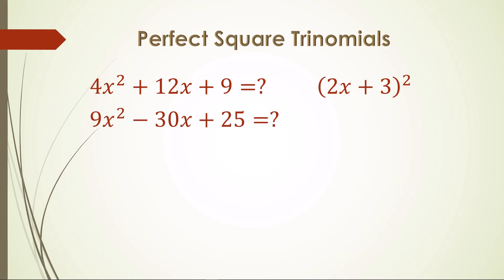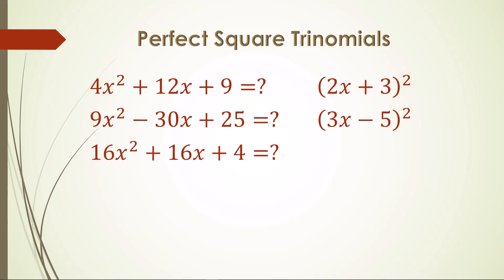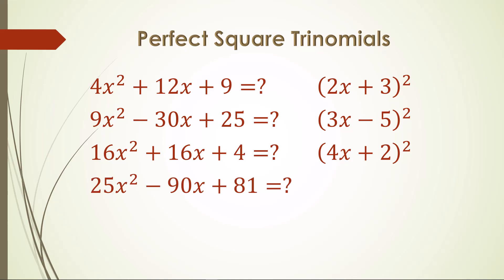In the second example, 9 and 25 are indeed perfect squares, with 3 as the square root of 9 and the coefficient of the factored binomial. But we see that the middle term is negative, which means we must use the negative square root of 25, negative 5, as the constant. We confirm that twice the product of 3 and negative 5, 2 times negative 15, is indeed negative 30. So we find 3x minus 5 as the square root. The next example has square roots of 4 and 2, which do produce the middle term 16 when multiplied and doubled, and so the square root of this one is 4x plus 2. The fourth example square roots are 5 and negative 9, since the middle term is negative, which do indeed produce negative 90 when multiplied and doubled, and so the factorization is 5x minus 9.